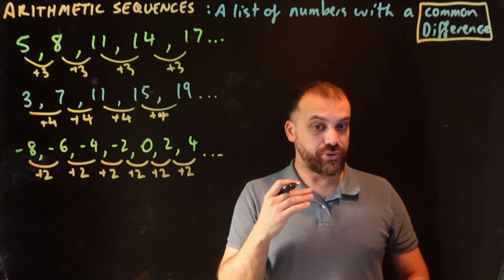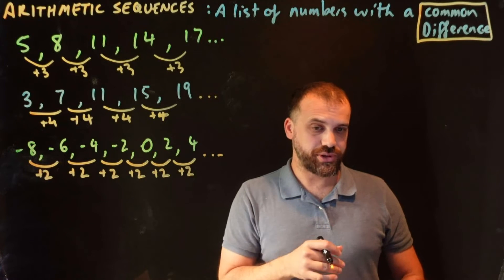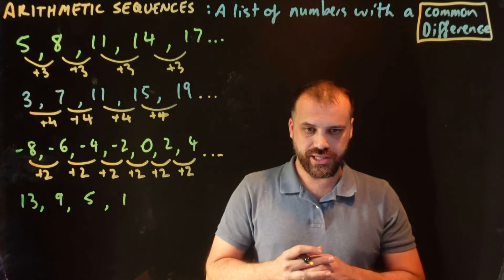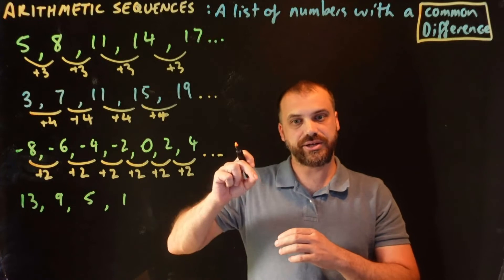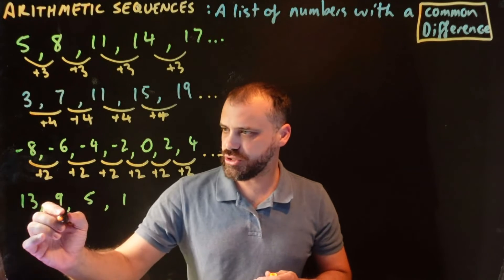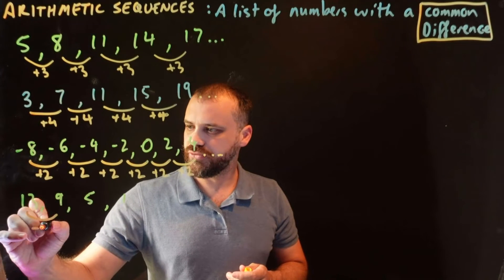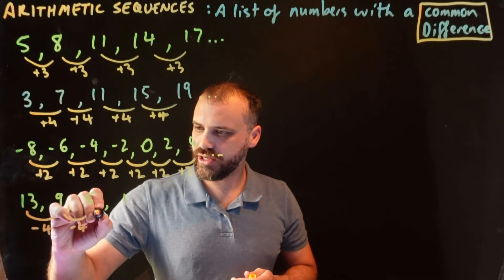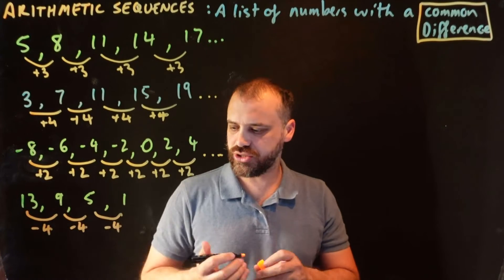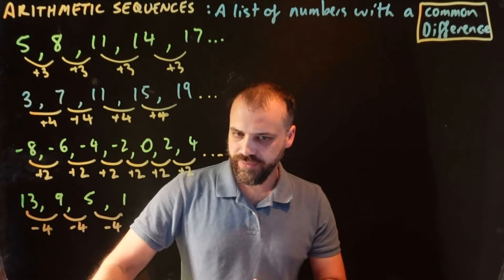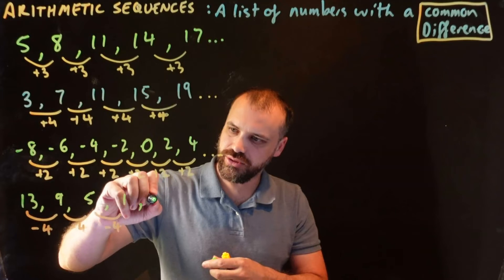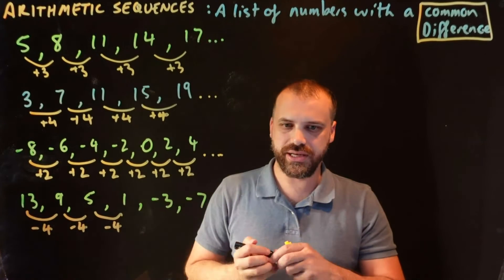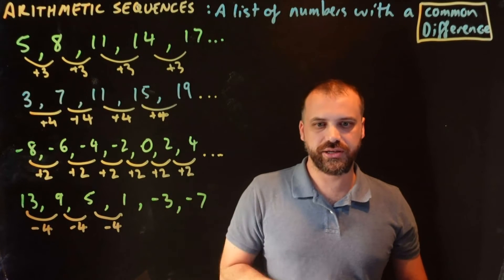Let's look at another one that might surprise you. Thirteen, nine, five, one — is an arithmetic sequence because it has a common difference between each term. In this case the common difference is negative four; we're subtracting four each time. That's interesting because the next term is going to be negative three and we end up in the negatives.